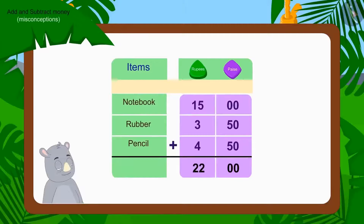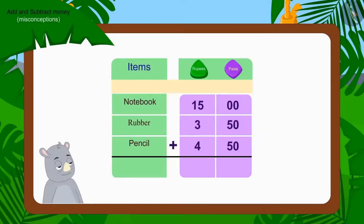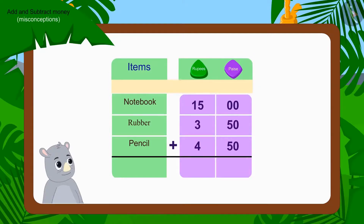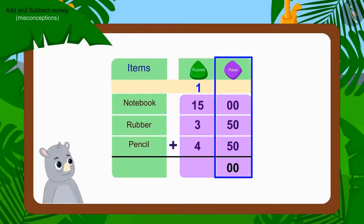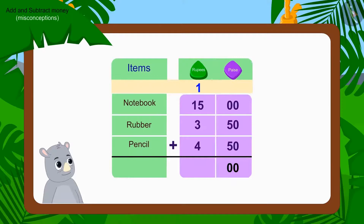No — Gaggu has done the addition wrong. Kids, can you tell what mistake Gaggu made? Let's find this out. We'll add the numbers of paise: 50 and 50 paise gives 100 paise. We will write 100 paise as carry over. Gaggu added 100 paise correctly but he forgot to write the carry over.